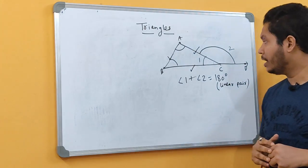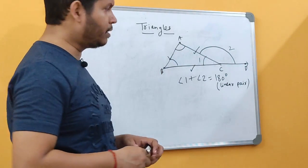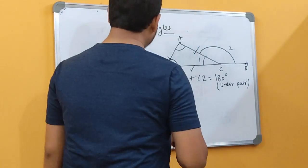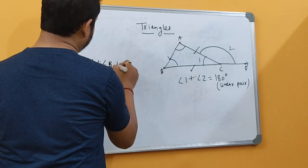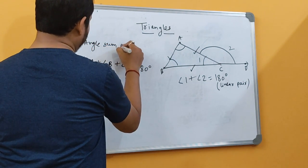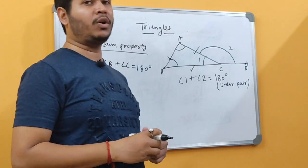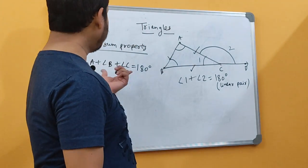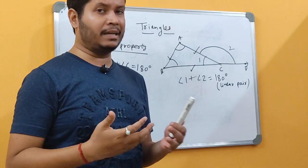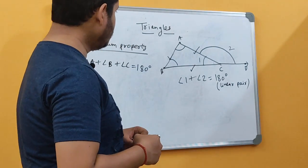One more property we all have to learn is regarding all the interior angles of a triangle. If I name the angles as angle A, angle B, and angle C — the interior ones — then always remember that the sum of these 3 angles will always be 180 degrees, and this is called the angle sum property of a triangle. That means if you do the sum of the interior angles, that sum will always be 180 degrees. This is a proven result and this property you can use anywhere in any triangle sum, not only in class 7 but in higher classes as well. This is one property which is very, very important.